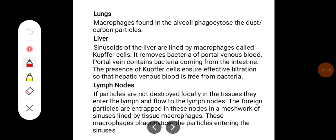In lungs, the macrophages are found in the alveoli. They can phagocytose dust and carbon particles. In liver, sinusoids of the liver are lined by macrophages. These are called kupfer cells.